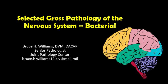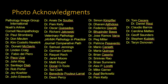Well hello, it's Bruce Williams again, and today I want to present the fourth lecture in my series on the Selected Gross Pathology of the Nervous System. We're going to talk about bacterial disease, and I've organized this lecture the way I generally look at bacterial disease in the central nervous system — by pathogenesis — focusing on how these agents get into the CNS, and within them, we can group the various bacterial genera that exploit every way to get in.